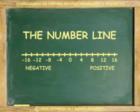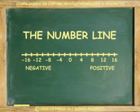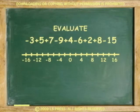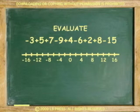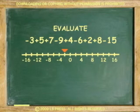To use the number line to find answers, start at zero and then move left and right according to whether the expression represents an addition or subtraction. Where the last operation lands, it gives the answer. For example, evaluate: negative 3 plus 5 plus 7 minus 9 plus 4 minus 6 plus 2 plus 8 minus 15. Starting at zero, move 3 to the left because it is negative 3, then 5 right, 7 right, 9 left, 4 right, 6 left, 2 right, 8 right, 15 left — the answer is negative 7.